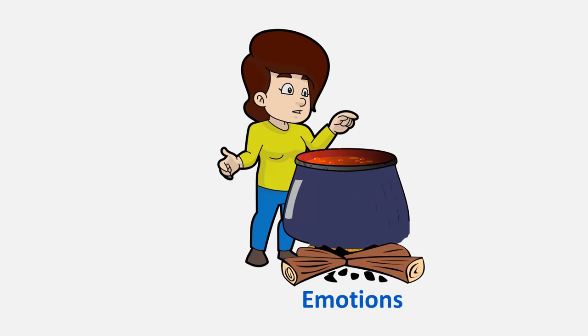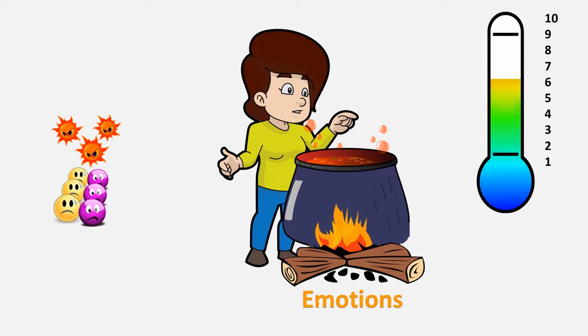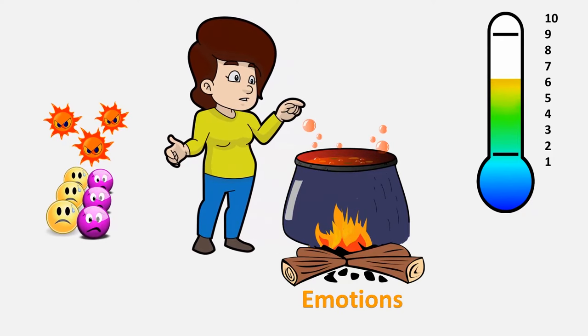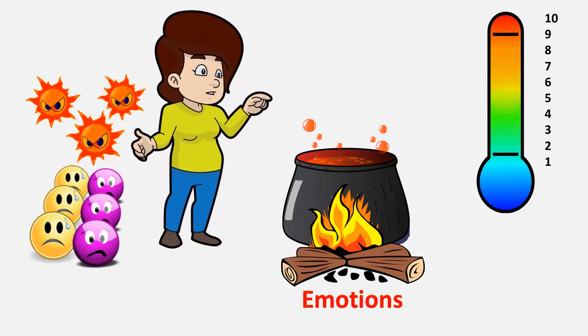If we can think of the intensity of our emotions on a scale from 1 to 10, where from about 1 to 3, this pot of emotions is cool to the touch and it's fine to handle it. From 4 to 6, the pot's still warm and maybe a little uncomfortable to touch, but it might still be okay. And then at 7 or above, that pot of emotions is so hot that if we touch it, we're going to burn ourselves.